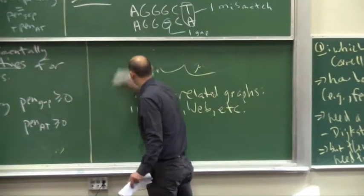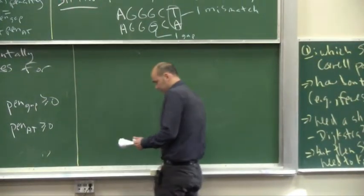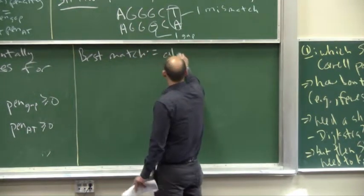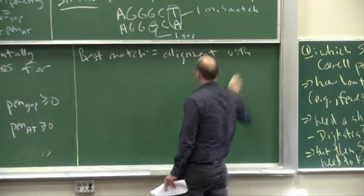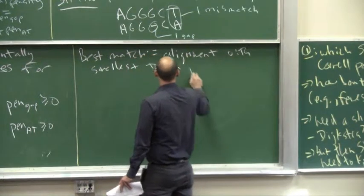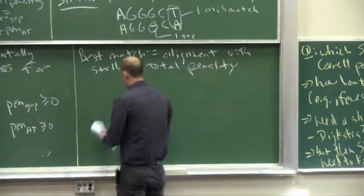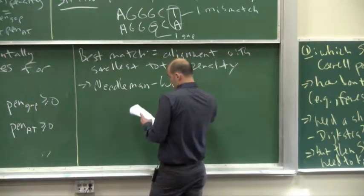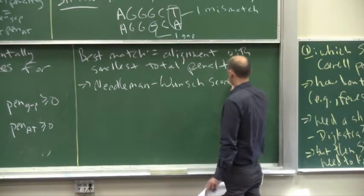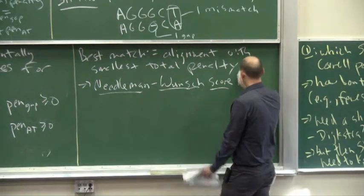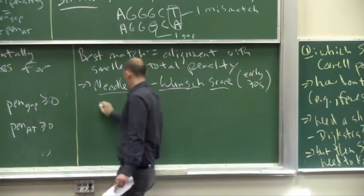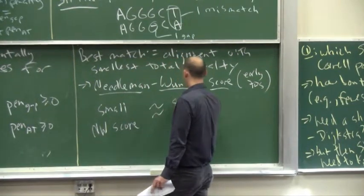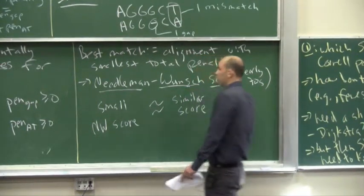I hope the computational problem, while we haven't solved it, is at least defined. The best match is just defined as the alignment with the smallest total penalty. This has a name — it's a famous concept in computational genomics: the Needleman-Wunsch score, named after the proposers, who were biologists in the early 70s. The interpretation is: if two strings have a small NW score, you interpret them as being similar; if they have a large NW score, you interpret them as dissimilar. What counts as small or large is determined by experiments.